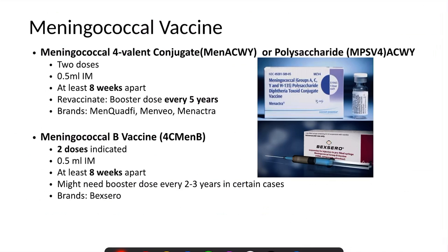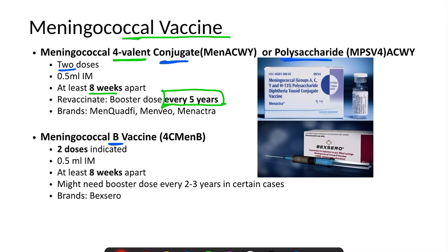The second vaccine required for asplenic or pre- or post-splenectomy patients is the meningococcal vaccine. This vaccine has two types: the four-valent vaccine, which comes in conjugate and polysaccharide forms, and the meningococcal group B vaccine. The four-valent meningococcal vaccine is recommended as two doses of 0.5 ml intramuscularly, at least 8 weeks apart, with a booster dose every 5 years. The meningococcal B vaccine is also given as two doses at least 8 weeks apart, and the patient may require a booster every 2 to 3 years in certain cases.